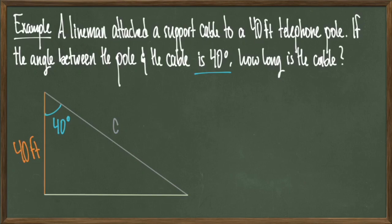Since my 40 degree angle is between the pole and the cable, it should be placed at the top of the triangle. The adjacent side of 40 degrees is 40 feet, because that's the length of the telephone pole. And we're just going to label the hypotenuse with c because that represents our cable.